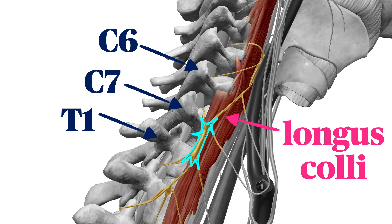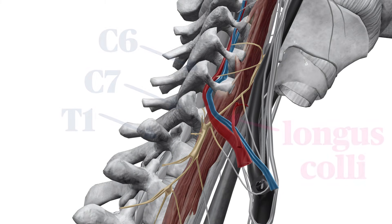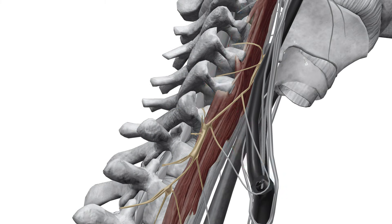Its name comes from its characteristic star-shaped appearance. Note there are connections to the middle cervical ganglion above and the second thoracic ganglion below. It's important to note that there are some important vessels that live nearby.